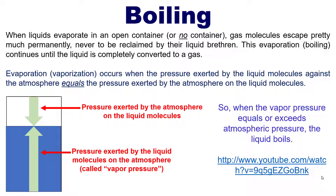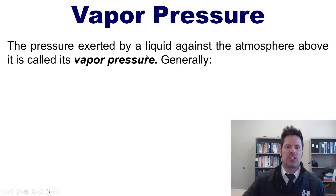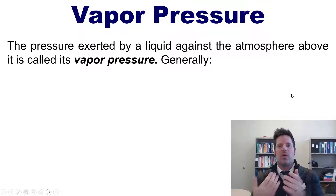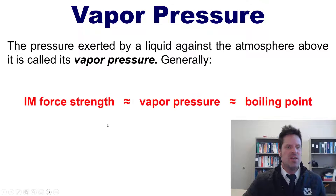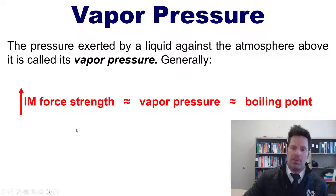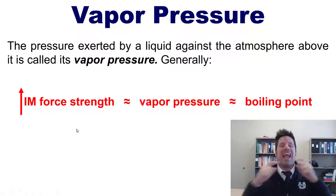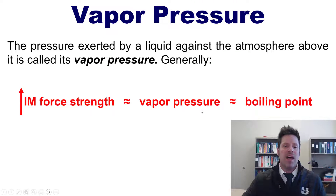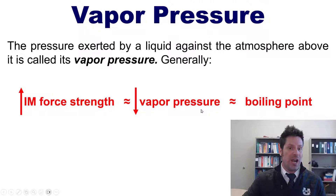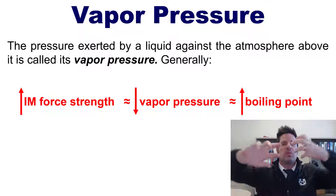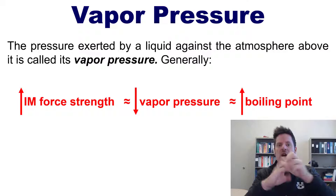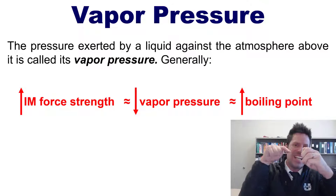Vapor pressure is the pressure exerted by the liquid against the atmospheric pressure above it. Generally, as intermolecular forces go up, molecules stick to each other more intensely, making it harder to boil. That means their vapor pressure actually goes down and their boiling point goes up. In other words, if you have strong intermolecular forces, those molecules stick intensely to each other, which means you have to put more heat into them to get them to wiggle apart and convert from liquid to gas.